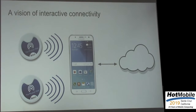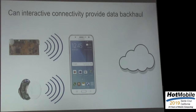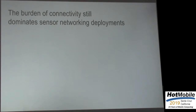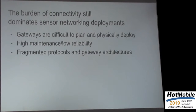These patterns of interaction are really exciting, but as someone who builds a lot of low-power and connected sensors, I saw this as exciting for another reason. It raised the question: could these same patterns enable a kind of backhaul for sensor networks? If we have sensors deployed in our physical spaces, can these technologies transport data back to the cloud? This is a big problem because the burden of connectivity is still really great for deploying sensor networks. Gateways are difficult to plan and deploy physically, they're high maintenance and low reliability, and we have a lot of protocol fragmentation in the IoT space — there's no single gateway you can buy that works for everything.